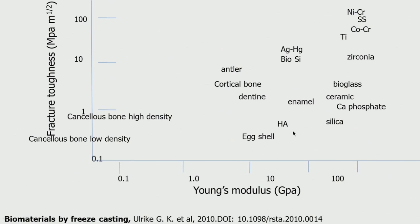Some bone material — high density, low density, cancellous bone — has very low Young's modulus as well as very low fracture toughness. So the fracture toughness of most ceramics is low whereas the compressive Young's modulus strength is high.